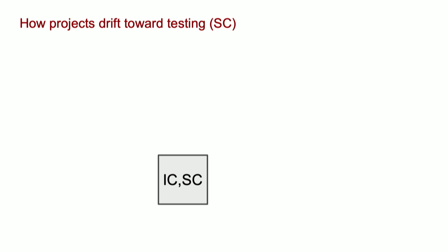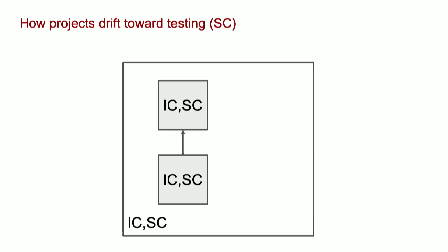Things never stay so simple. Here's an example where we've got two modules, and the first module is working with the second module. Everything is small, I've got it all under control. There's a containing box, and what I mean by that is that's the system as a whole. With that system, I have both intellectual and statistical control.